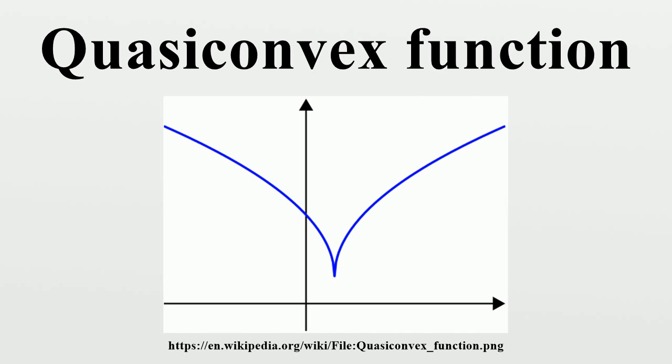Any monotonic function is both quasi-convex and quasi-concave. More generally, a function which decreases up to a point and increases from that point on is quasi-convex.